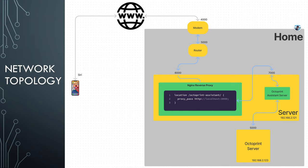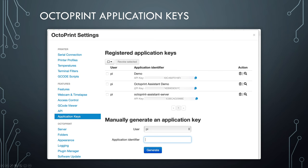OctoPrint Assistant is simply an intermediate server that translates the JSON format response into human-understandable language. This is the general network topology of my setup. The OctoPrint Assistant server is installed on my Raspberry Pi, and on the same Raspberry Pi I have an Nginx reverse proxy — though the two services do not need to be on the same server. Siri will send a web request to my home on port 4000 of my modem. The traffic is forwarded to the router on port 5000, then to port 6000 of my server where the Nginx reverse proxy is listening. When it sees 'octoprint-assistant' in the URL, it forwards the request to port 7000 where OctoPrint Assistant is running. OctoPrint Assistant then sends a request to the OctoPrint server, retrieves the information, parses the JSON response, translates it to human-understandable language, and sends it back to Siri.